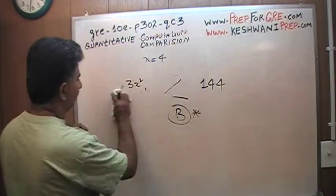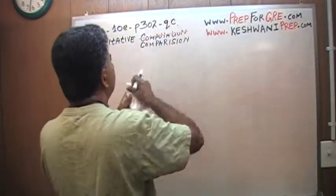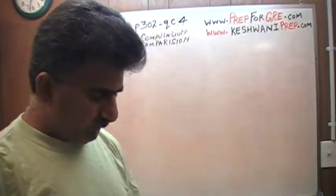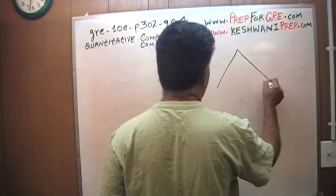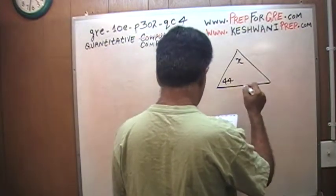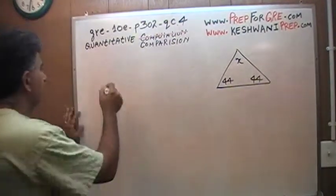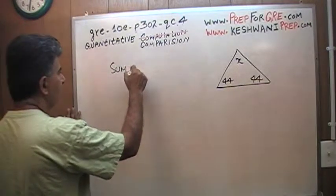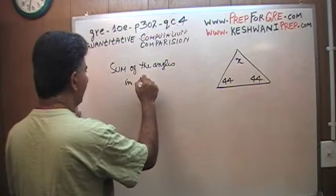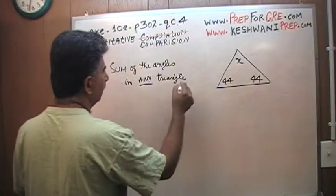Let's do number four. In question number four, they're simply asking you how much is x, and they give us a triangle. This is x, this is 44, and this is 44. This is very straightforward and simple because we know that the sum of the angles in any triangle equals 180.